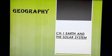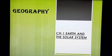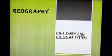The stars are huge hot bodies of gases which have their own heat and light. The solar system has the Sun, eight planets, satellites, asteroids, meteors and comets. The Sun is our main source of heat and light, and the Sun is also a star.